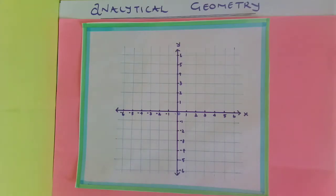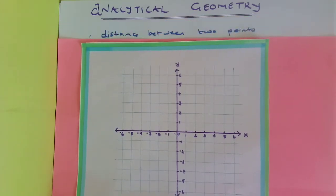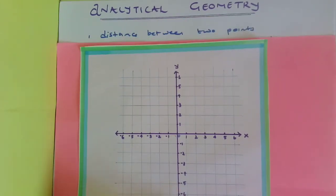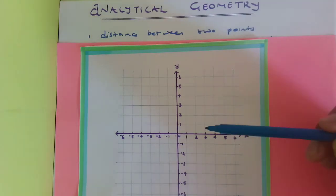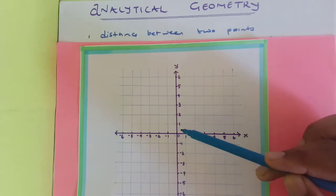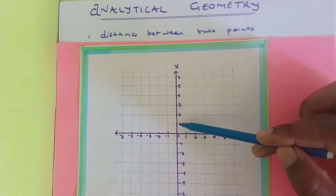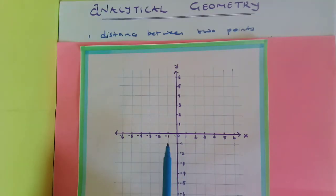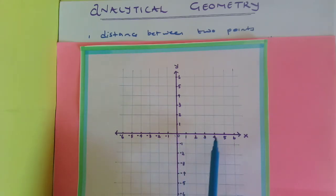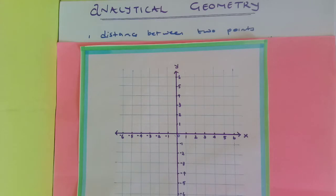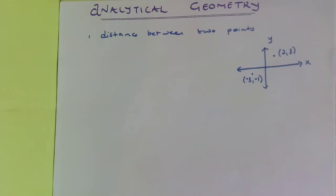For this video we're going to study how to find the distance between two points. Distance is the measure of the length between two points. For example, from the origin to a point four units along, the distance is just four units. However, what happens if the points given are not on a horizontal or vertical plane? We cannot just count one, two, three, four.